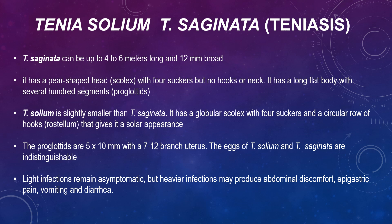With regards to morphology, T. saginata can be up to 4 to 6 metres long and 12 millimetres broad. It has a pear-shaped head — a scolex with 4 suckers and no hooks. It has a long flat body of several hundred segments, proglottids, each segment measuring 18 x 6 millimetres with a branched uterus. The egg is 35 x 45 micrometres, roundish and yellow-brown, with peripheral radial striations and contains an embryo with 3 hooks.